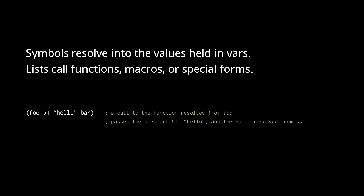As for lists, the evaluator will first try to treat a list as a function call. This list represents a function call with three arguments. The function that gets invoked is stored in the var resolved from the symbol foo. The arguments are the number 51, the string hello, and the object stored in the var resolved from the symbol bar.